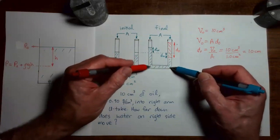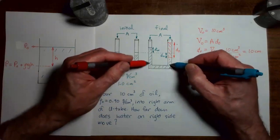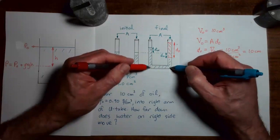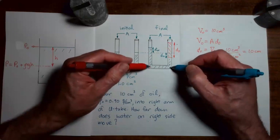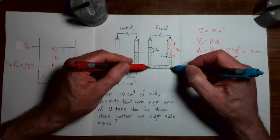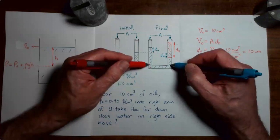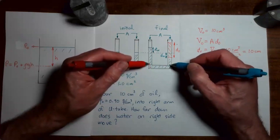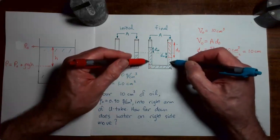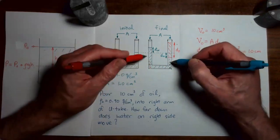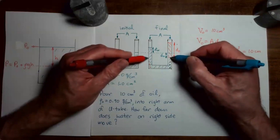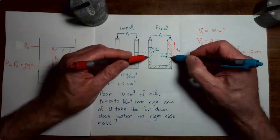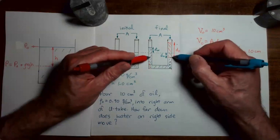Starting from those two equal-pressure corners and moving up by equal distances on either side, we experience equal drops in pressure, so we remain at equal pressures at every corresponding height. That logic continues all the way up until we reach the bottom of the oil column on the right side. Therefore, the pressure at the bottom of the oil column on the right equals the pressure at the same height on the left side.